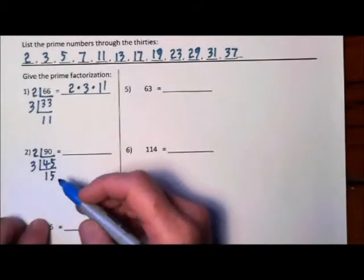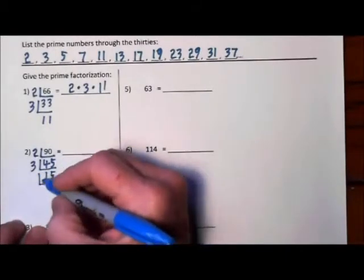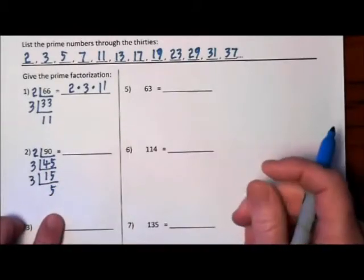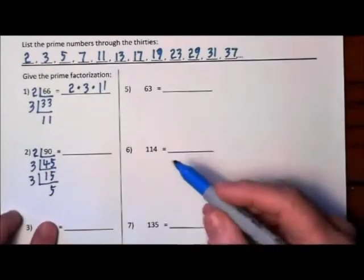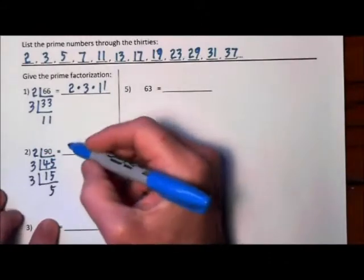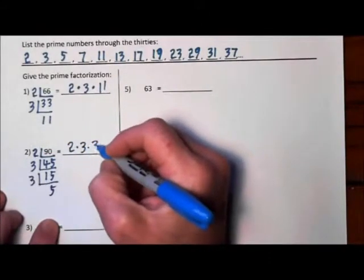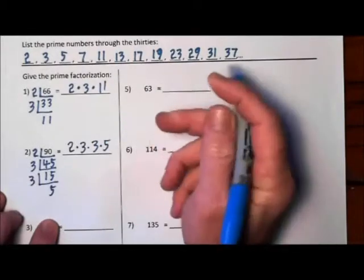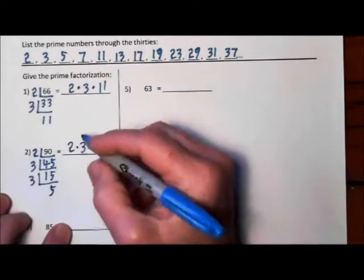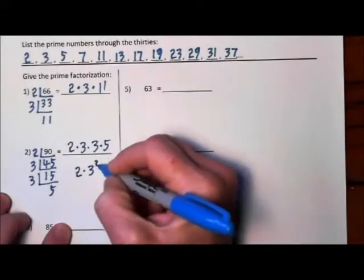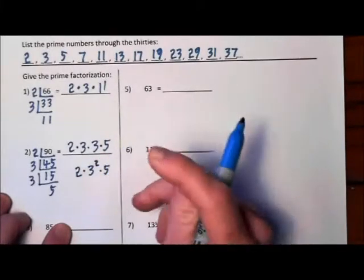Will 3 go into 15? Yes. So you go in with a 3 again. 3 goes into 15, 5 times. So the prime factorization of 90 is 2 times 3 times 3 times 5. And we could also write this 2 times 3 squared times 5.